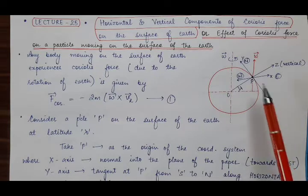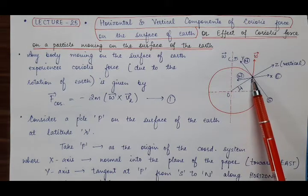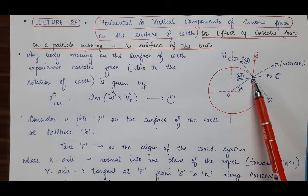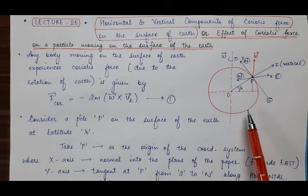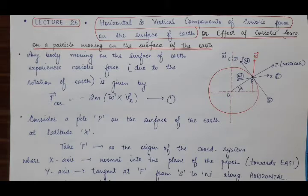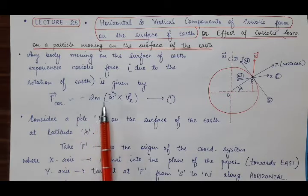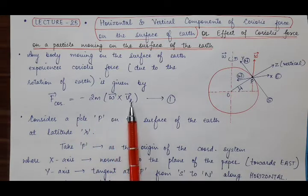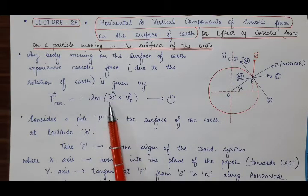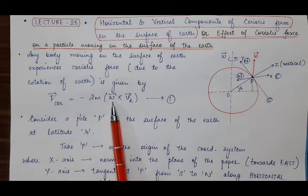First of all, consider any body or particle of mass m moving on the surface of earth. Because of the rotation of earth with angular velocity omega, it will experience Coriolis force. This Coriolis force is given by F_Coriolis = minus 2m omega cross vr, where vr is the velocity of the particle moving on the surface of the earth and omega is the angular velocity of the earth.